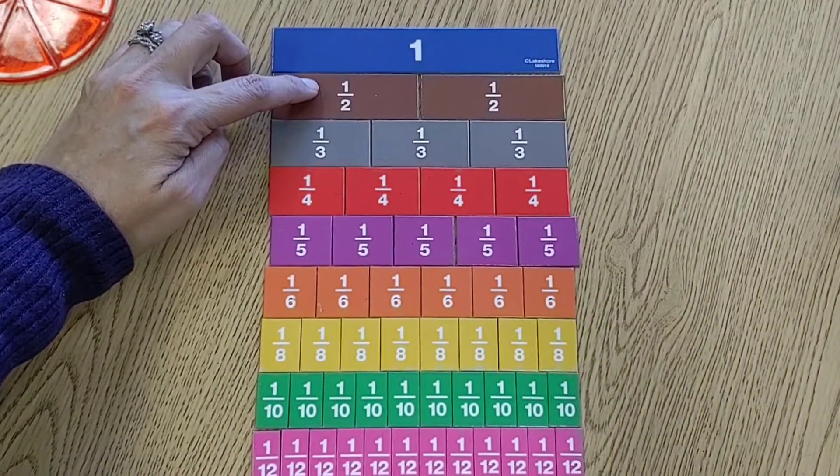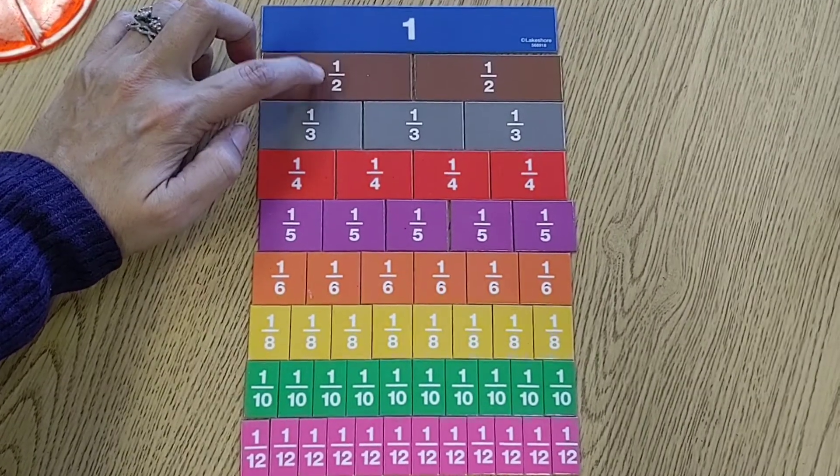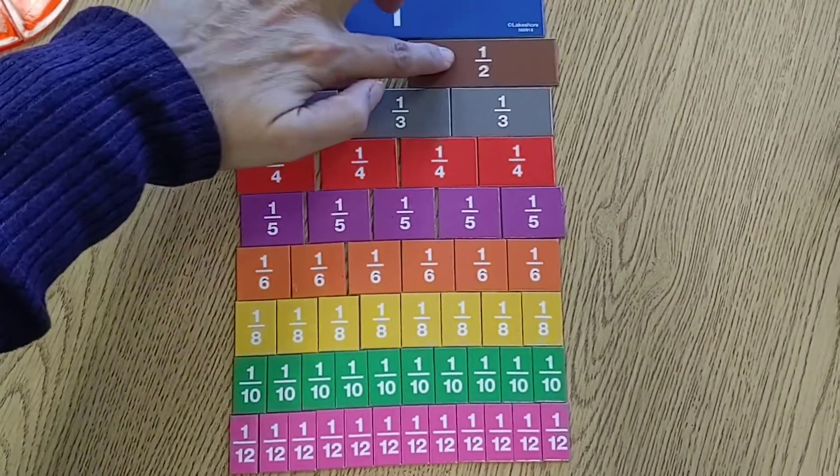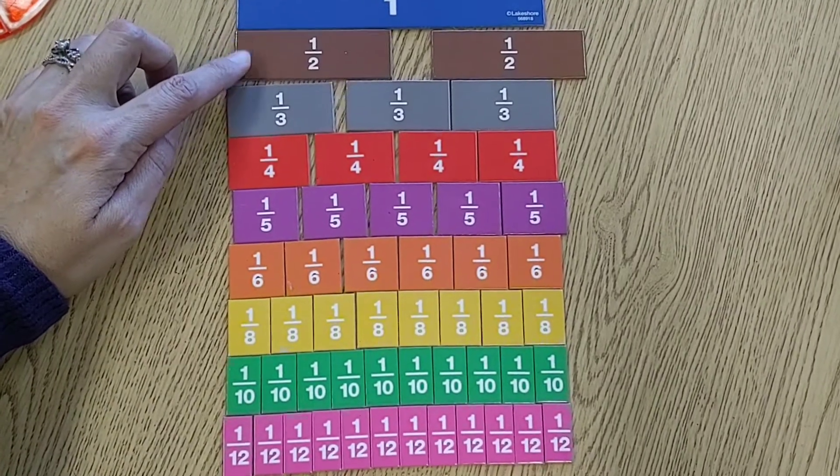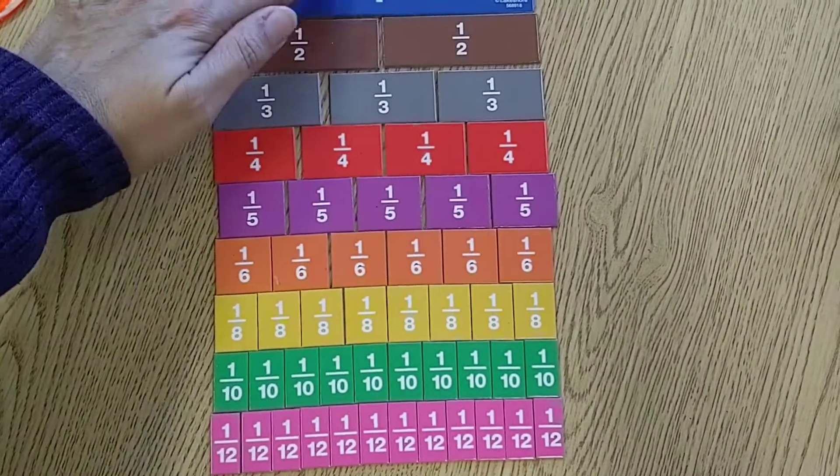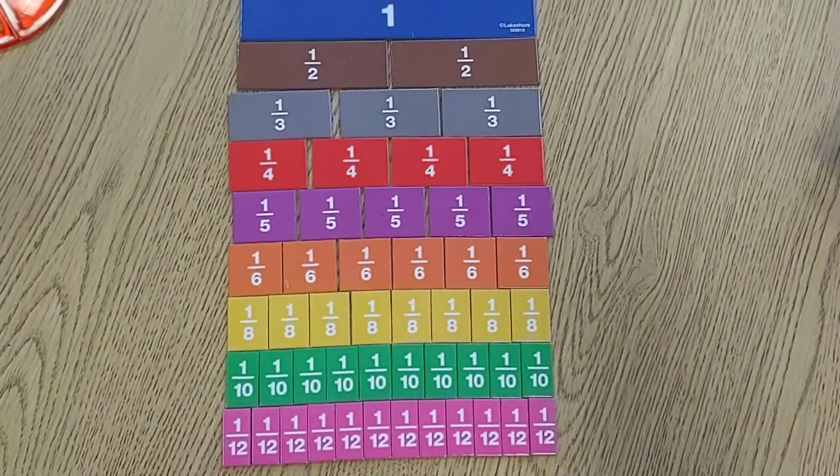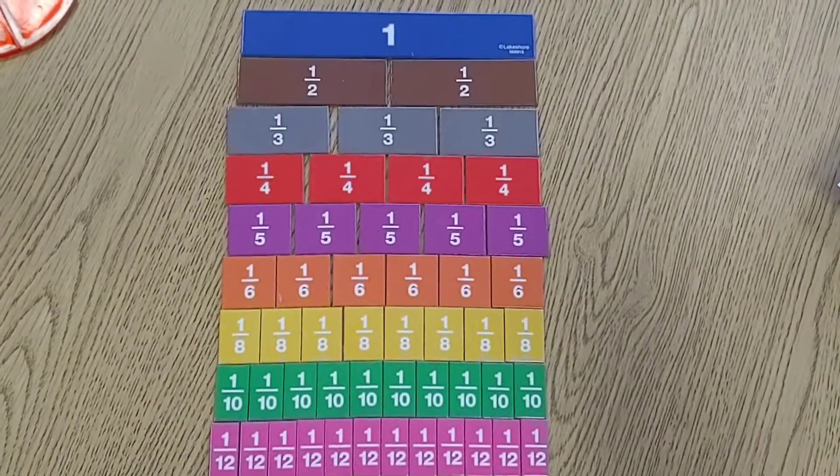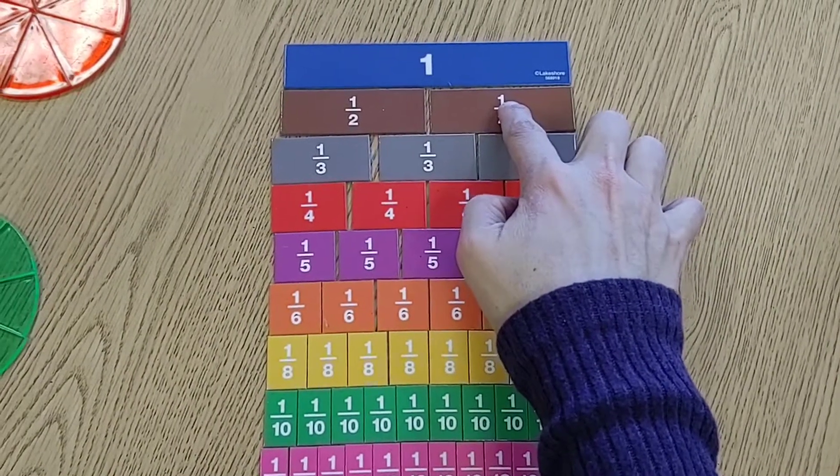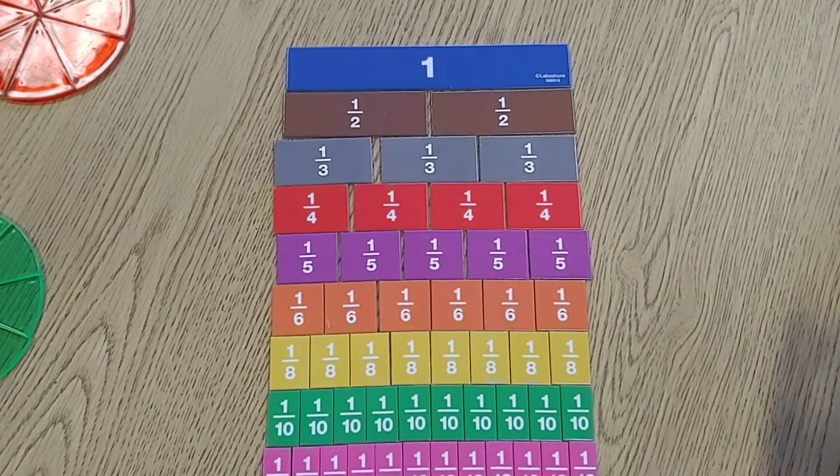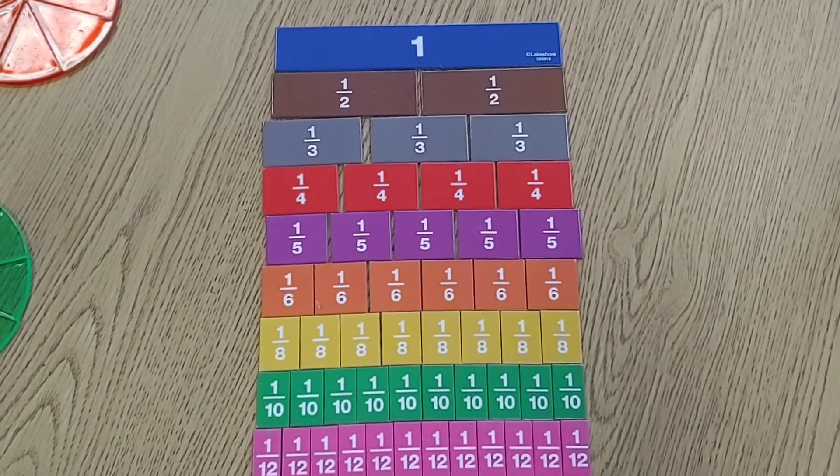This is called half, one half. When I separate it out, there are two of these because two halves equals one whole. So when I have two halves, that would be one plus one equals two, and that would be two over two which equals one whole.